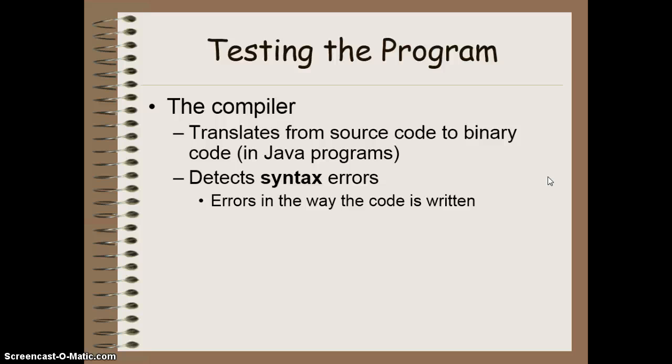Once you've done that, and sometimes as you're writing your code, you'll start to test your program. And there are two different ways you can do that. One is through the use of the compiler. So every time we try and compile our code, essentially what we're doing is we're translating from the source code that we've written into binary code, specifically in Java programs, that the computer can understand. So this will be translated into the zeros and ones that computers work with. During this process, the compiler is going to detect any syntax errors. These are errors in the way that the code is written. So for example, I'm missing a semicolon, or I've got the wrong kind of bracket, or I'm trying to use a variable that hasn't been given a value yet. All those kinds of things that would actually make our program crash or not be able to compile properly.